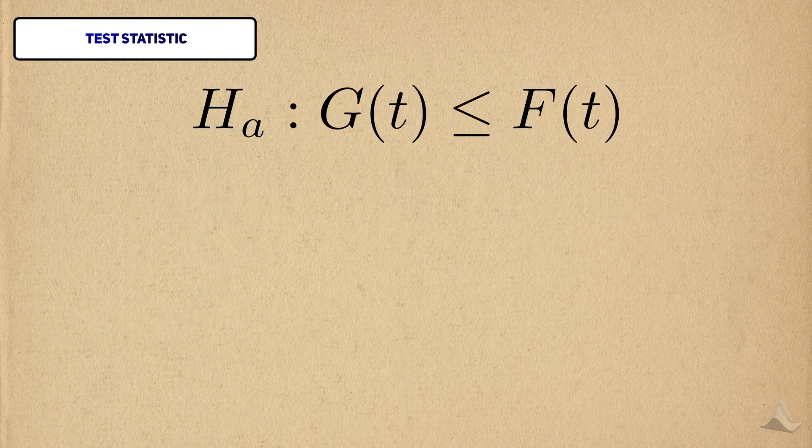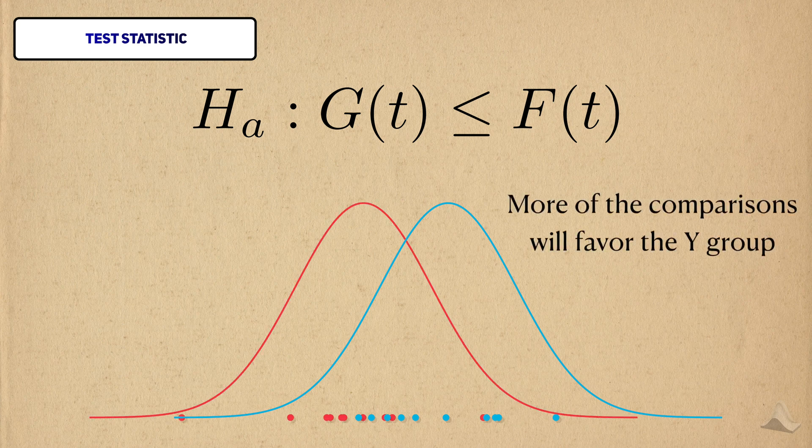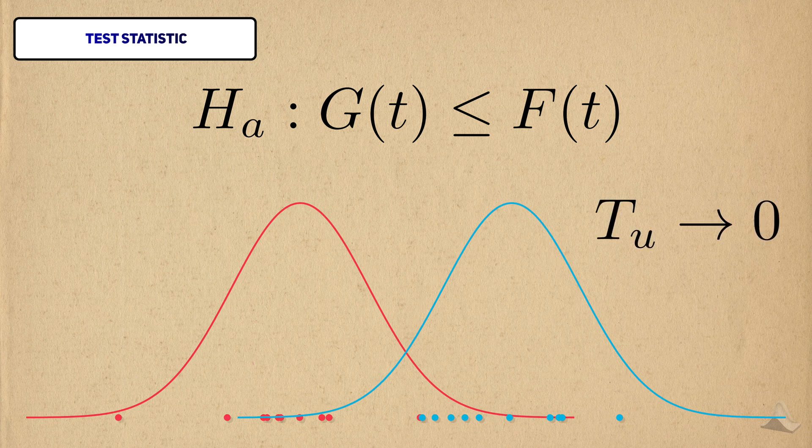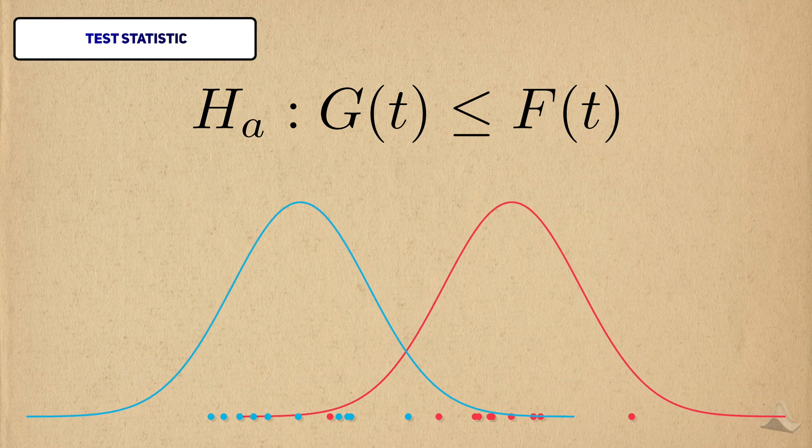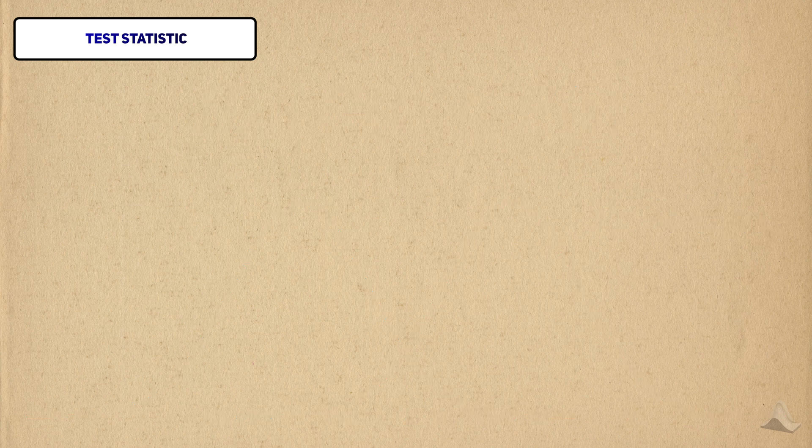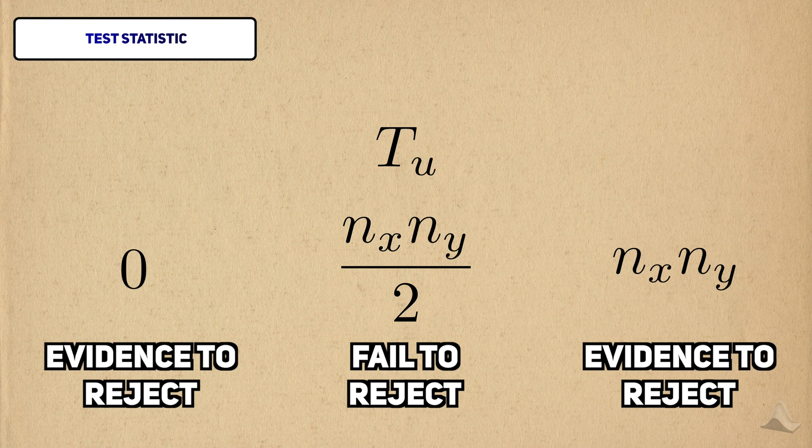Under the alternative hypothesis, the observations in y will tend to be bigger than those in x. Thus, more of the comparisons in the statistic will favor y. If the location shift is big enough, then it's possible to see a test statistic close to zero. If we flip the labels, then the statistic will be close to the total number of comparisons. Therefore, the Mann-Whitney statistic will tend to be extreme, depending on which group is bigger.